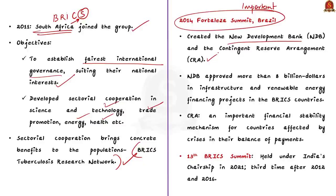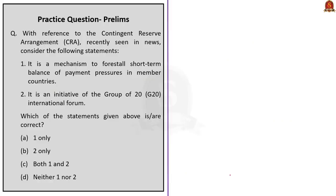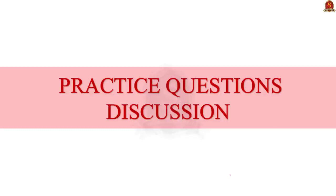The important institutions created during the summit are New Development Bank and the Contingent Reserve Arrangement. This is an important point. So far, the NDB has approved more than $8 billion in infrastructure and renewable energy finance projects in the BRICS countries. The CRA is an important financial stability mechanism for countries affected by crisis in their balance of payments. Finally, know that the 13th BRICS summit was held under India's chairmanship in 2021. This was the third time India has hosted BRICS summit after 2012 and 2016. With this, we have come to the end of the discussion. In this discussion, we saw about the BRICS joint statement and we also discussed about BRICS in detail. Now, let us move on to practice prelims questions.